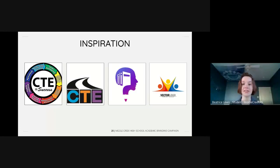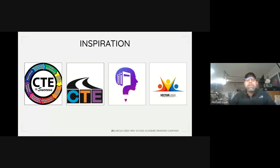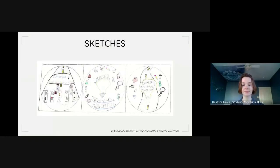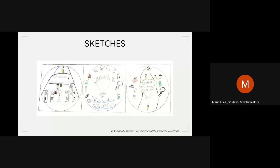We then created an inspiration board to help us capture concepts for the new logo design. We found symbols such as circles surrounding the department name, a road representing the path to the CTE department, heads with symbols and pathways, and a logo with people combined together. From there, we used those ideas to brainstorm sketches. For my sketches, I chose to utilize a road to show the path to the career of your choice, and in the middle, a large amount of symbols to demonstrate the wide variety of courses the department offers.